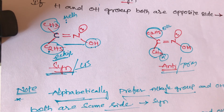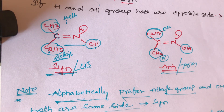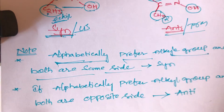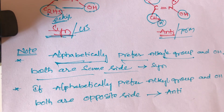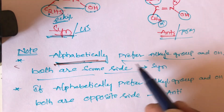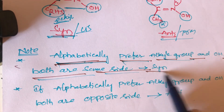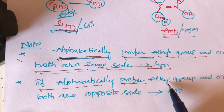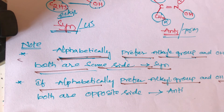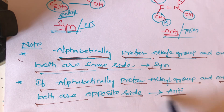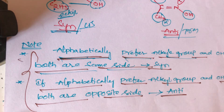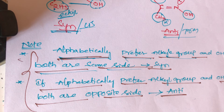These are the simple tricks for geometric isomerism in oximes. The rule: alphabetically preferred alkyl group and OH group on the same side = syn; alphabetically preferred alkyl group and OH group on the opposite side = anti. These are important for NEET, JEE, and other competitive exams.